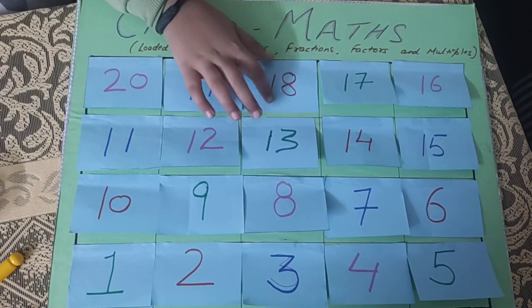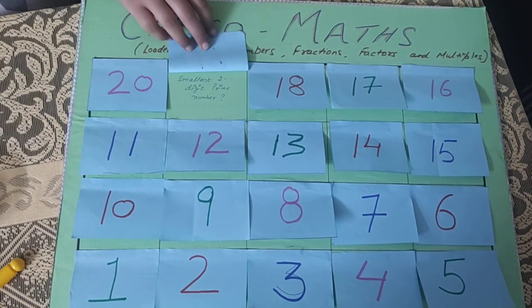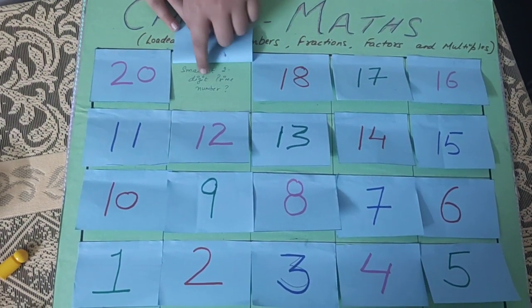Yay! We are safe! 18th. Smallest 2-digit prime number.